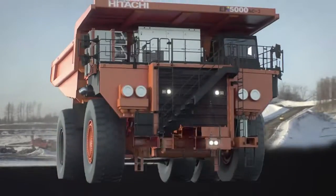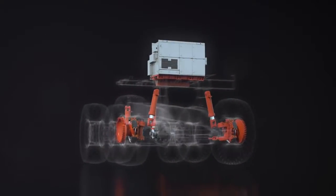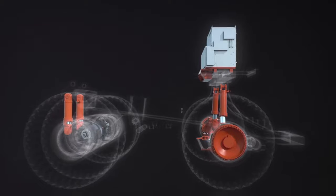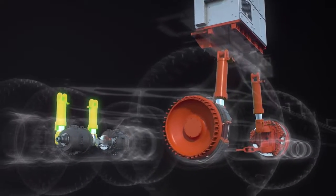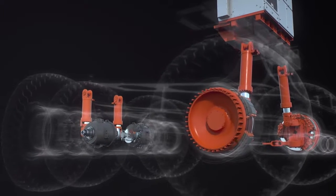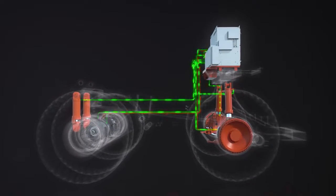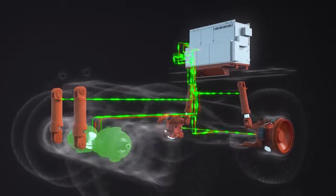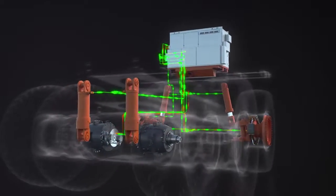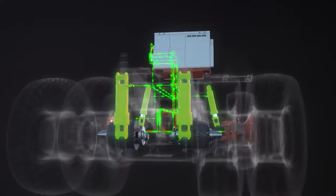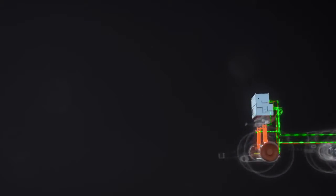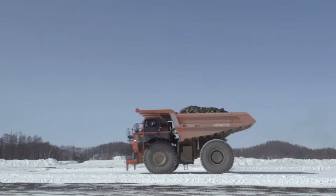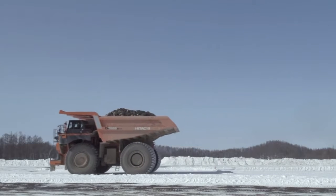When a truck crosses a pothole or drives over an uneven surface, pitching occurs due to increased pressure on the front suspension and the rear suspension compensating, giving a rebound effect. The Hitachi drive control system monitors acceleration, wheel speed, and suspension pressures from all four struts. When a sudden increase in the front strut pressure is detected, the system adjusts the wheel motor torque to counter the pitching motion whilst the truck is in motion.